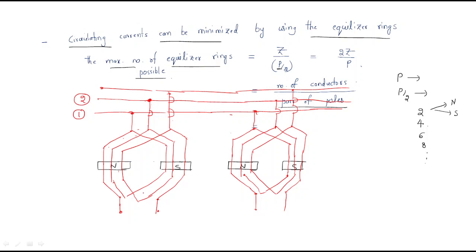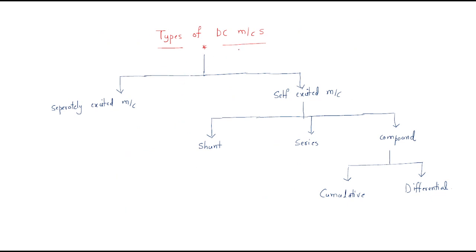Next, the topic is the types of DC machines. Up to now we discussed what a DC machine is, how it works, and what armature winding is. Now we enter the types of DC machines. Generally there are two types: one is the separately excited DC machine and the other is the self-excited DC machine. Excitation means giving flux — the flux is applied from outside or generated internally.